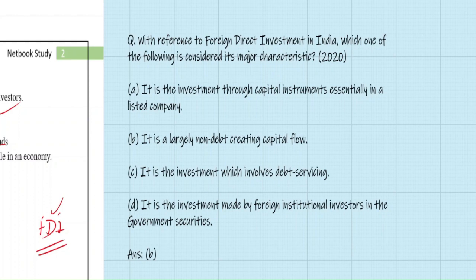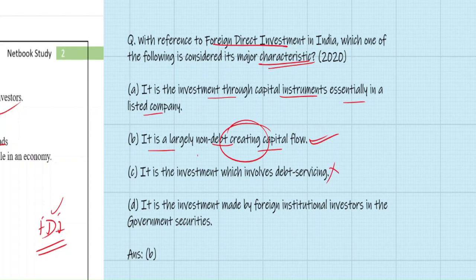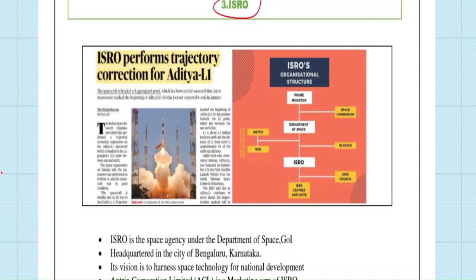Previous year question: With reference to FDI in India, which is considered its major characteristic? Option A: investment through capital instruments in a listed company. Option B: largely non-debt creating capital flow. Option C: investment involving debt servicing. Option D: investment made by foreign institutional investors in government securities. The correct answer is Option B — FDI is a largely non-debt creating capital flow, whereas FPI is debt-creating. Options C and D relate to stock markets only.